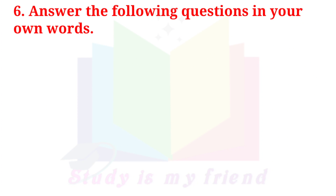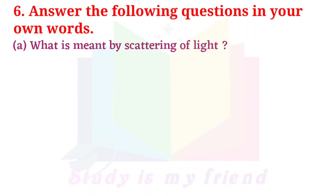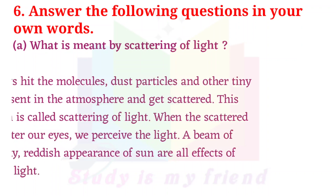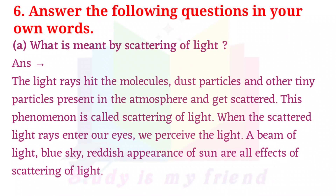Answer the following questions in your own words. A. What is meant by scattering of light? Answer: The light rays hit the molecules, dust particles and other tiny particles present in the atmosphere and get scattered. This phenomenon is called scattering of light. When the scattered light rays enter our eyes, we perceive the light. A beam of light, blue sky, and the reddish appearance of the sun are all effects of scattering of light.